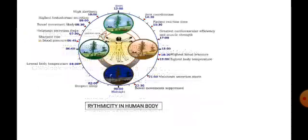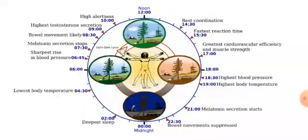Look at this diagram. This diagram shows the rhythmicity of physiological changes with respect to behavioral changes in a human body — that is, how our behavior changes over the course of a day due to changes in physiological processes. After 12 pm, our body has best coordination due to the fastest reactions. Moving towards evening, our body has higher blood pressure and higher temperature.